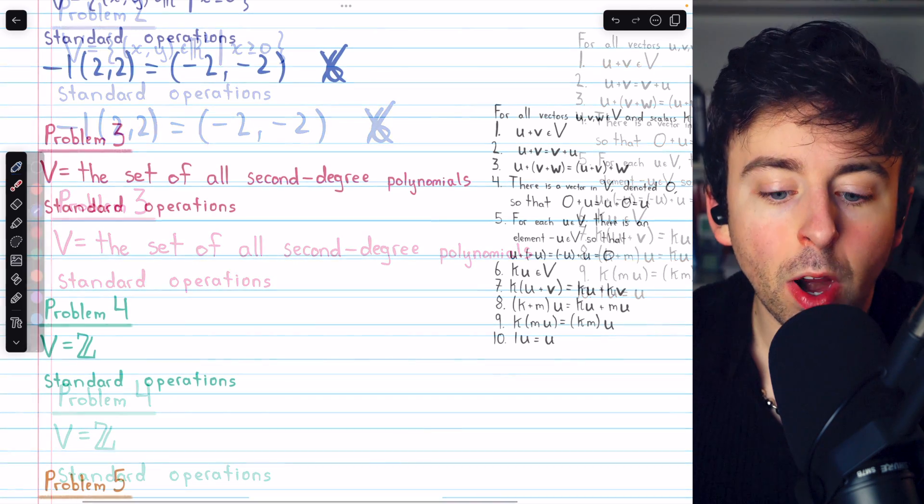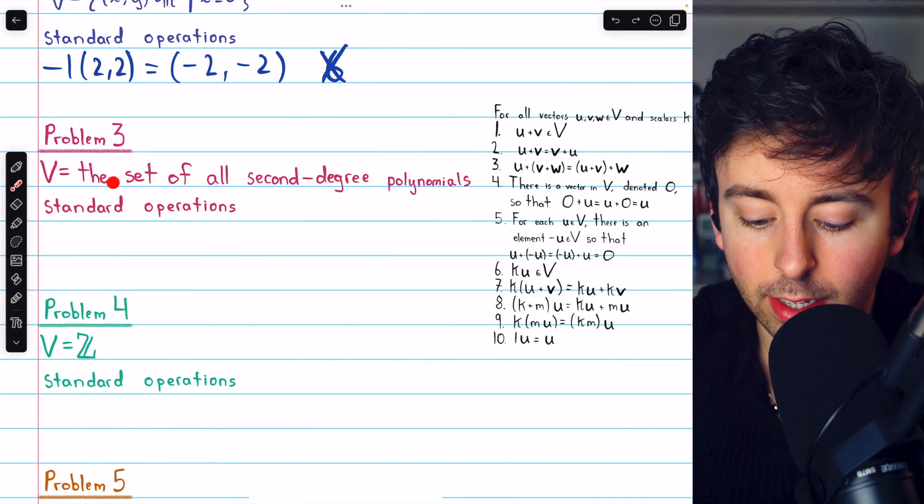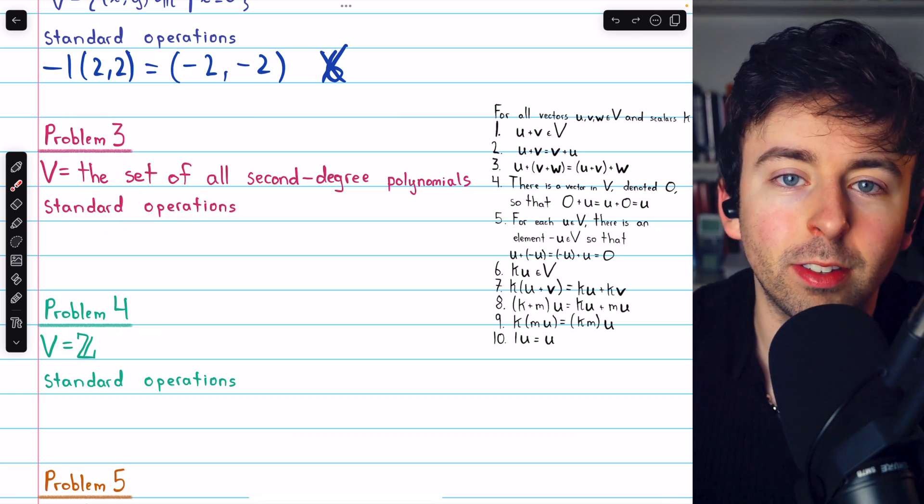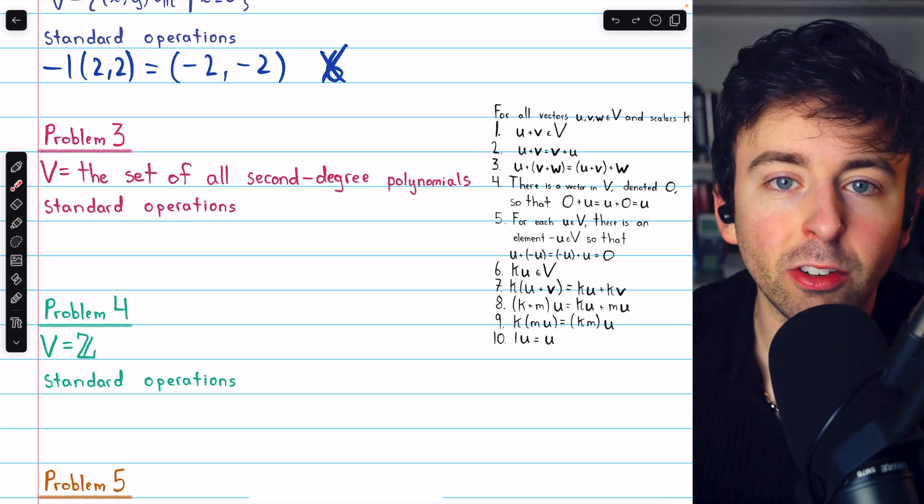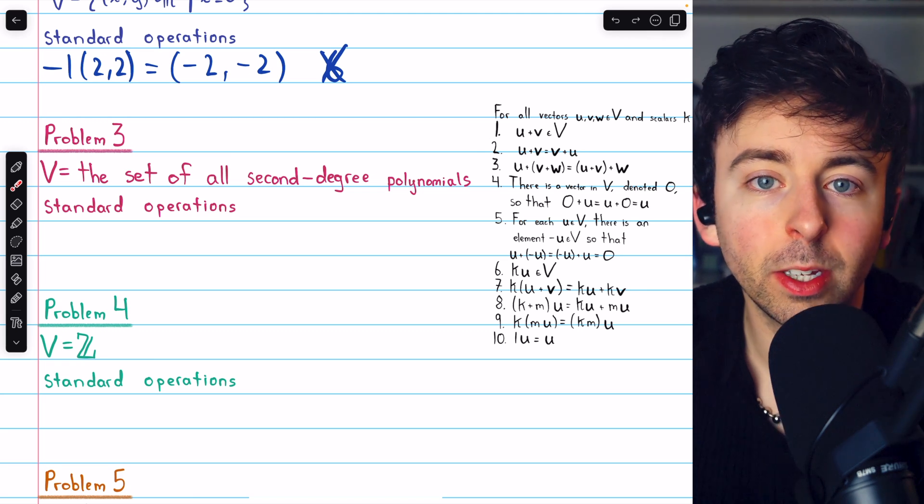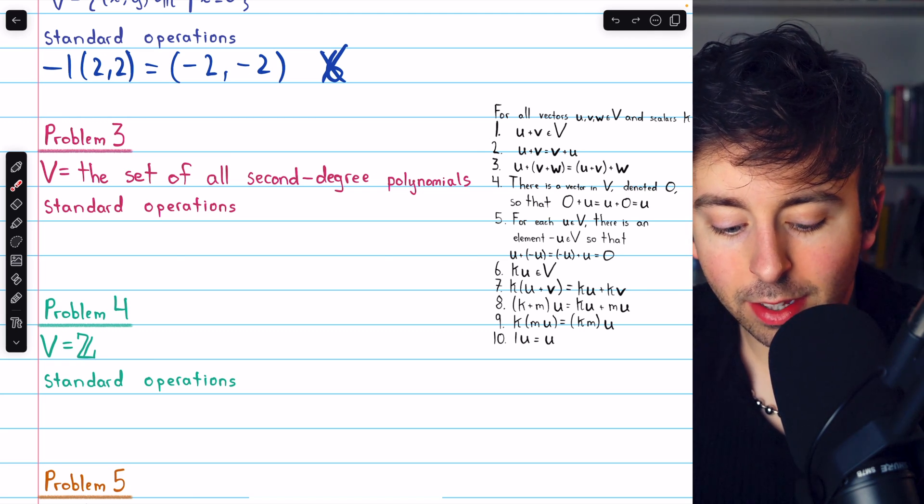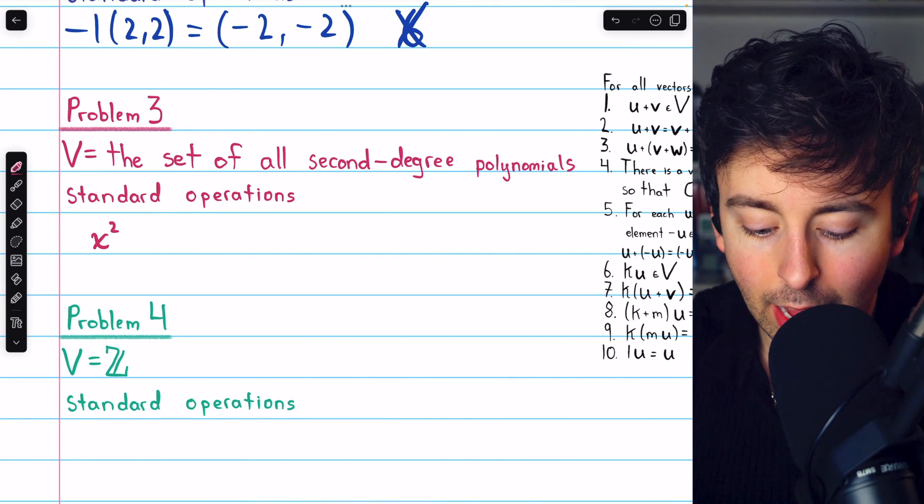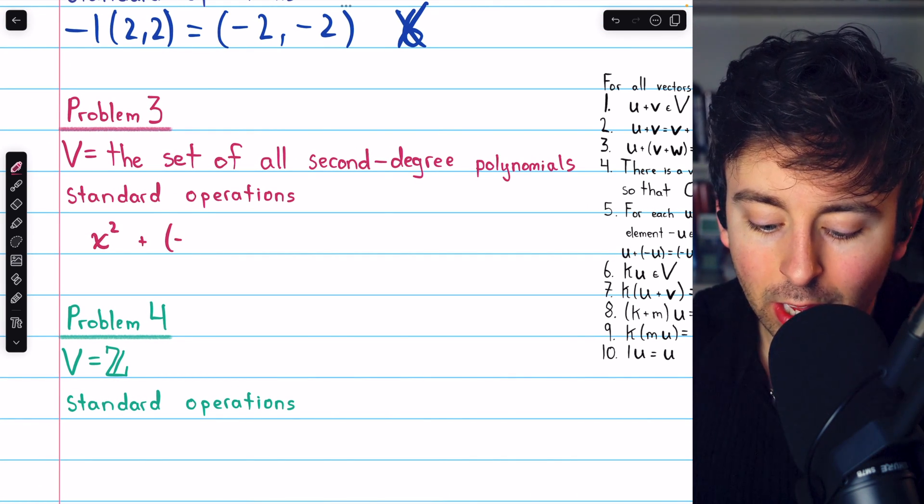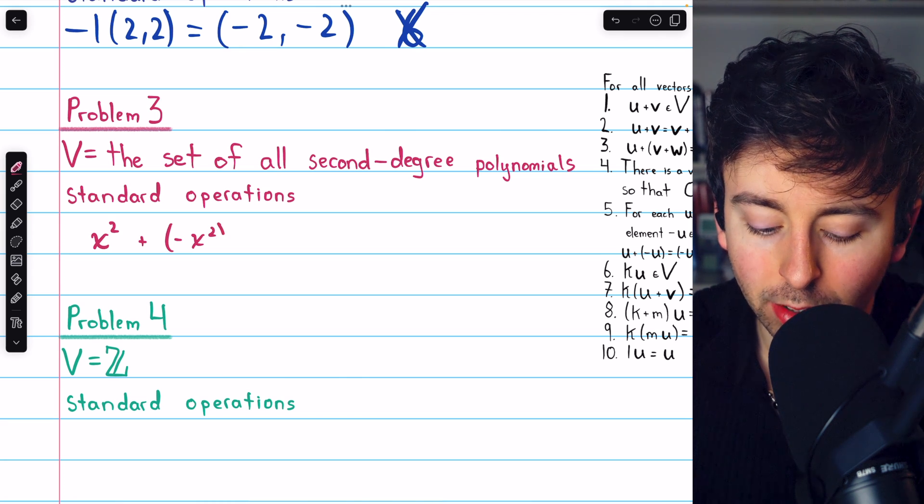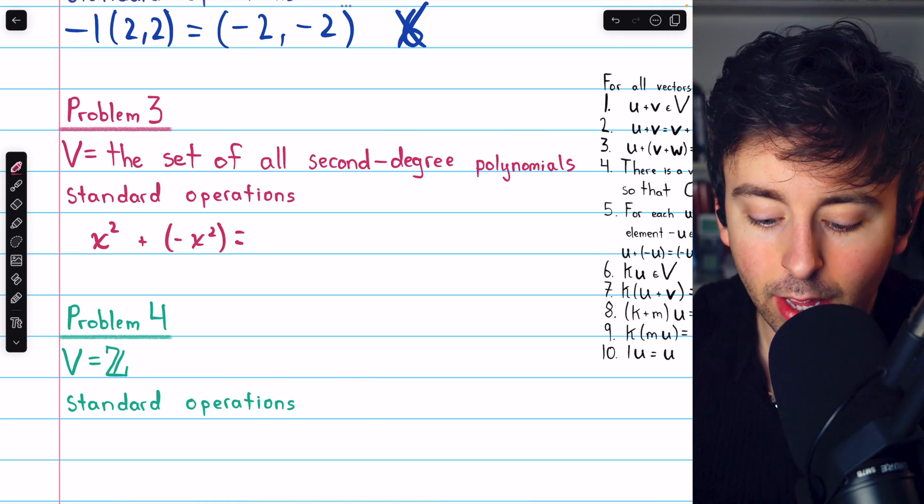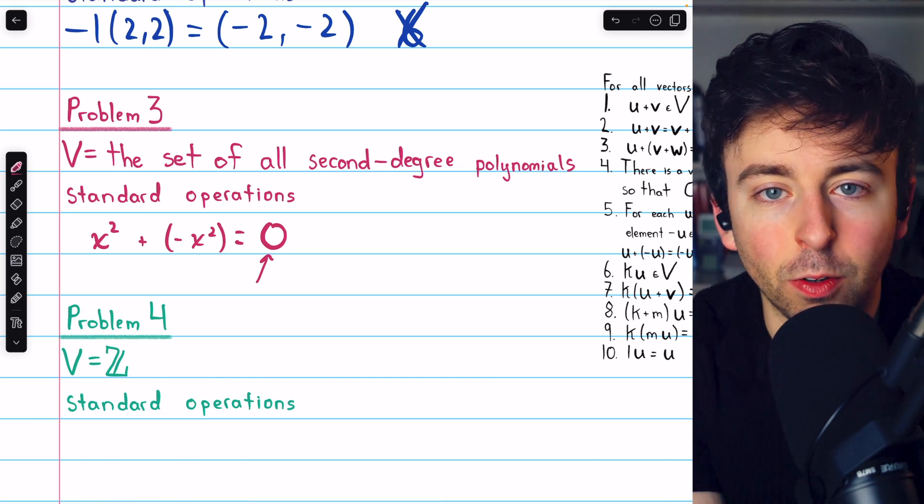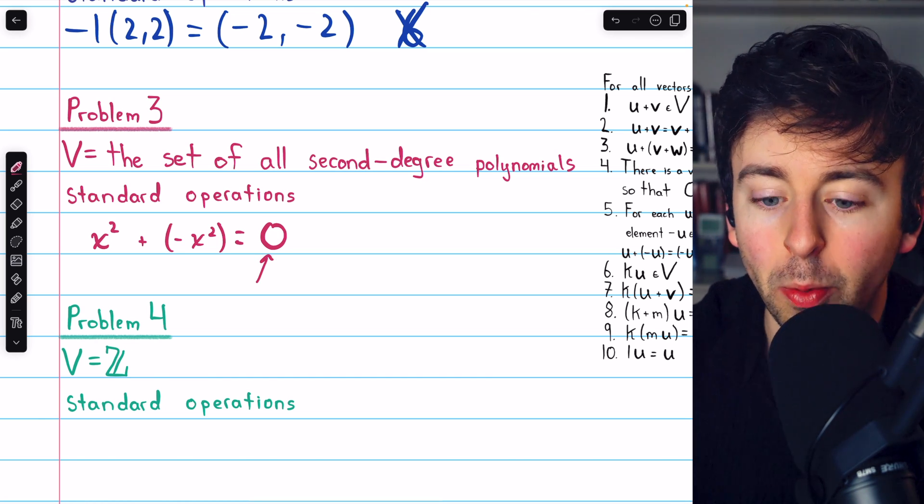Let's move on to problem 3. In problem 3, our set is the set of all second degree polynomials with the standard operations of polynomial addition and scalar multiplication would just be multiplying the polynomial by a real number. In this case, we do have inverses, for example, I could take x squared and negative x squared. But this is actually a problem, because if I combine these two elements of our set, we're going to get zero. And zero is not a second degree polynomial,